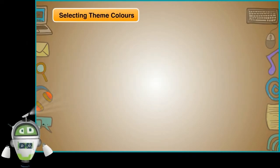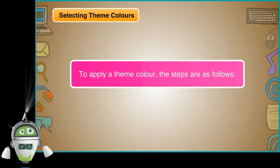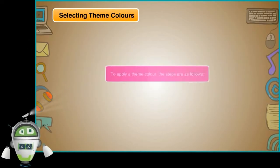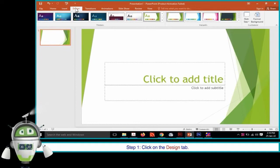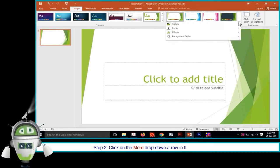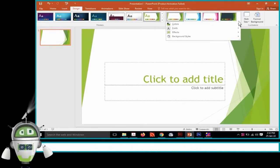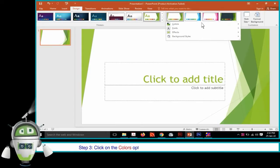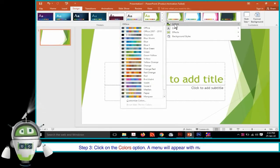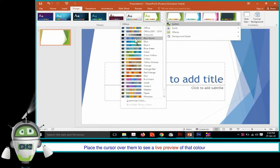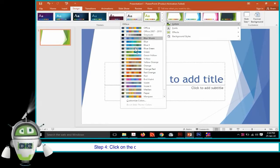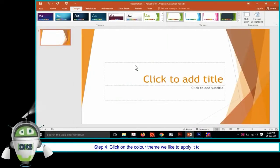Selecting Theme Colors. To apply a theme color, the steps are as follows. Step 1: Click on the Design tab. Step 2: Click on the More drop-down arrow in the Variance group. Step 3: Click on the Colors option. A menu will appear with many color options. Place the cursor over them to see a live preview of that color in the slides. Step 4: Click on the color theme we like to apply it to the slides.